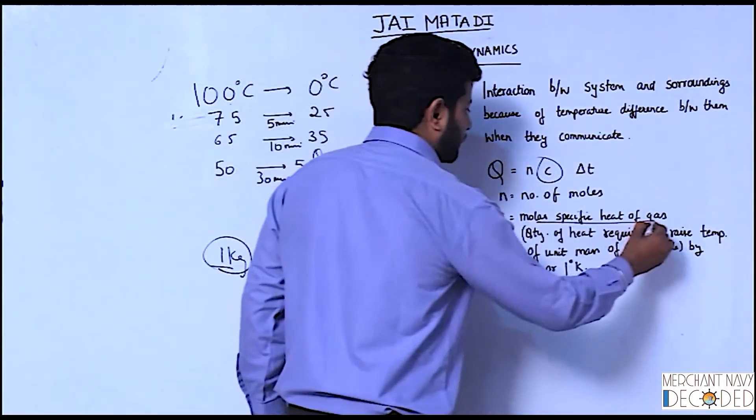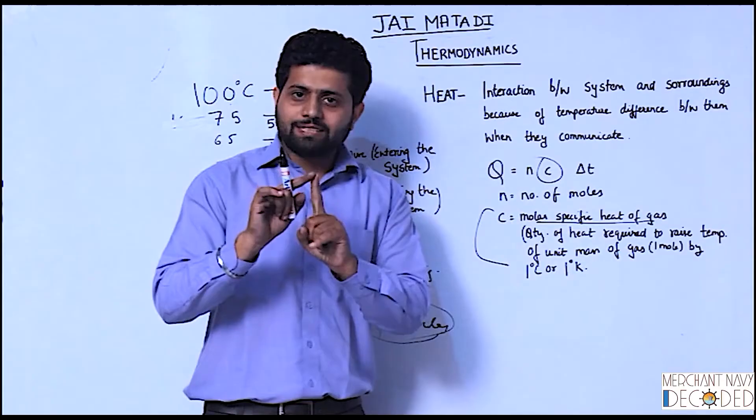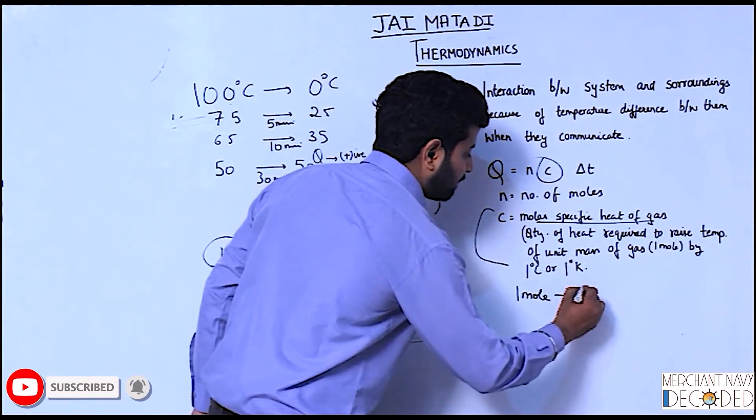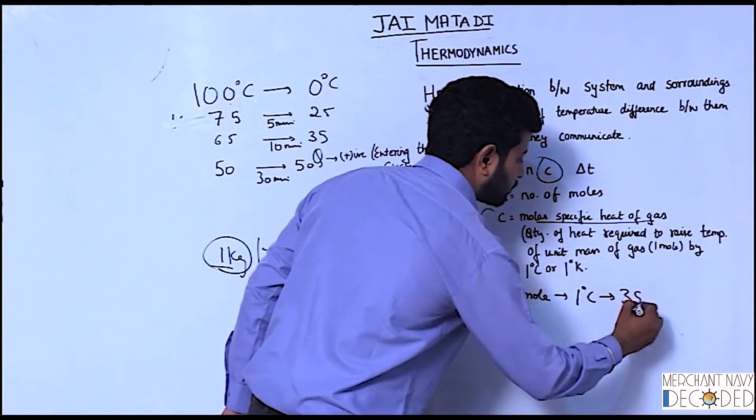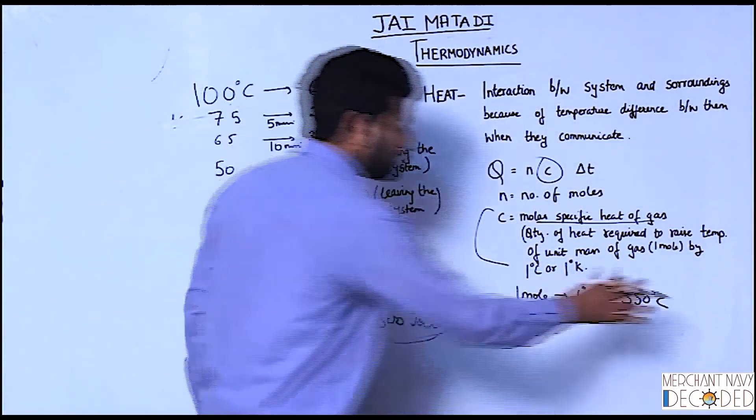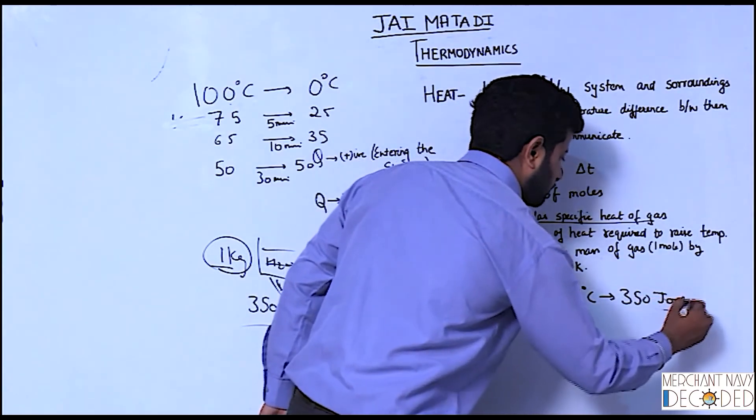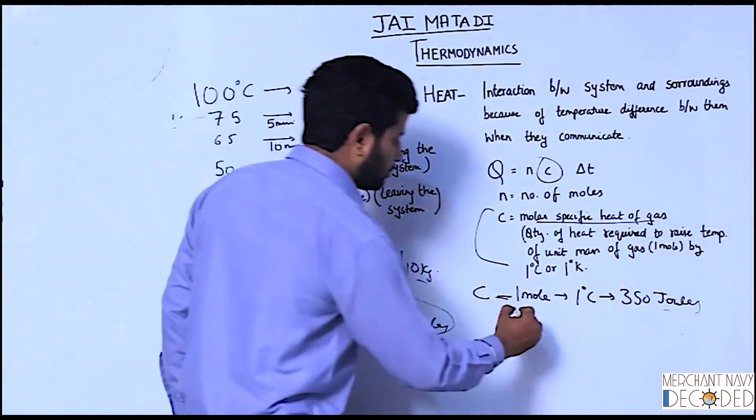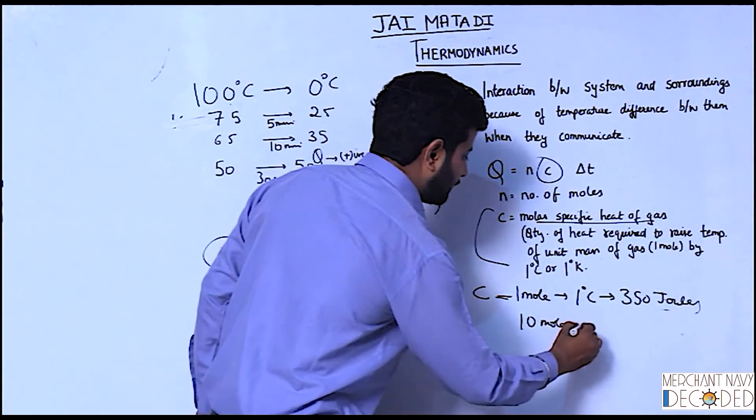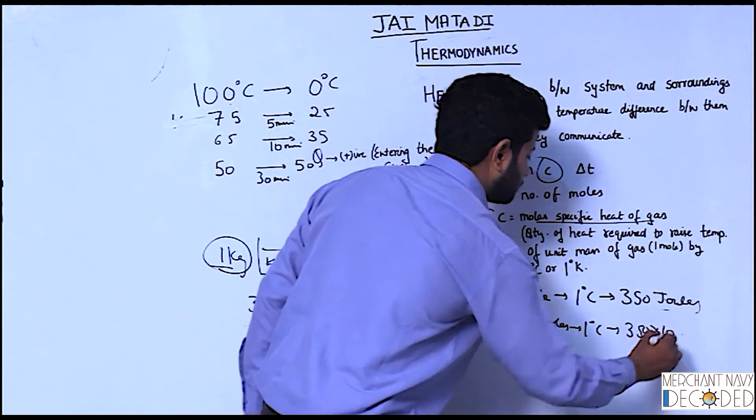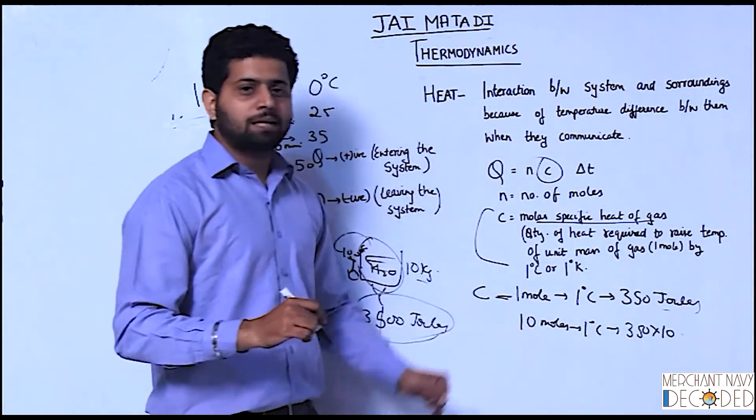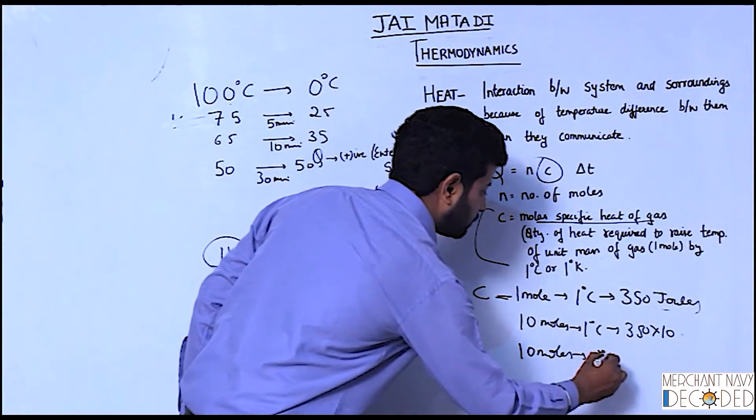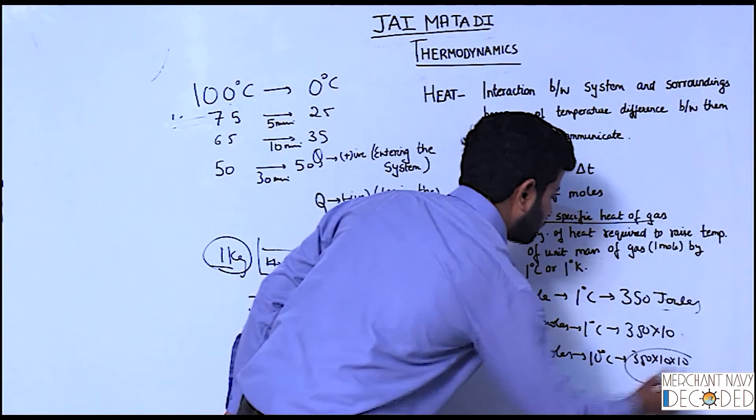This says molar specific heat of gas. I have got, say, for 1 mol, if I have to raise temperature by 1 degree centigrade, then how much? Say I need 350 Joules. This is C. Now I say, sir, I do not have 1 mol, I have got 10 mol. Oh, got 10 mol by 1 degree centigrade. I will have to multiply it by 10, sir. Now, sir, I do not have to raise the temperature by 1 degree centigrade of these 10 mols, I have to increase it by 10 degree centigrade. Oh, 10 mols by 10 degree centigrade. 350 into 10 into 10, that is how you get this formula.